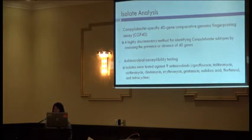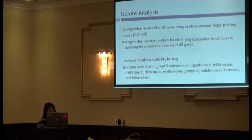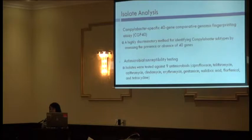After samples were taken, Campylobacter was isolated using standard methods and sent for molecular subtyping. Campylobacter-specific 40-gene comparative genomic fingerprinting assay, or CGF40, is our molecular subtyping technique of choice. It's a highly discriminatory PCR-based method that identifies the presence of 40 genes scattered throughout the Campylobacter genome. The output is a binary 1-0, where 1 represents gene presence and 0 absence.